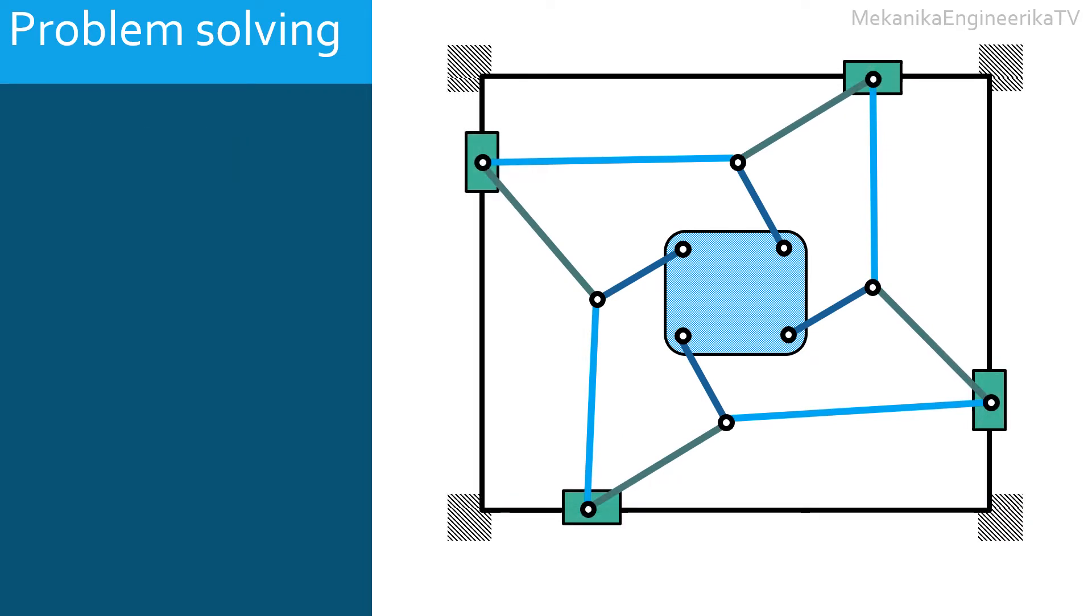First, we need to determine L, the number of links or the number of mechanical parts in the mechanism. Second, we need to determine J1, the number of lower pairs, or the number of joints allowing each one degree of freedom.